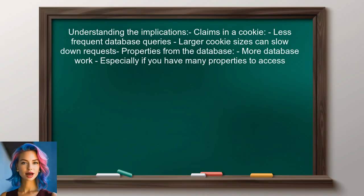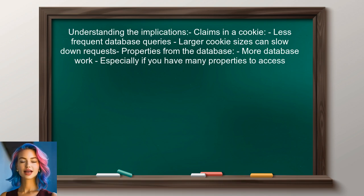To understand this better, we need to consider the implications of each approach. Claims stored in a cookie mean less frequent database queries, but larger cookie sizes can slow down requests. Conversely, querying properties from the database can lead to more database work, especially if you have many properties to access.